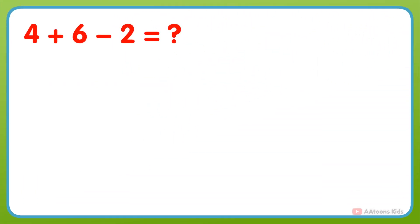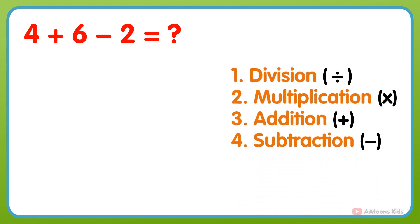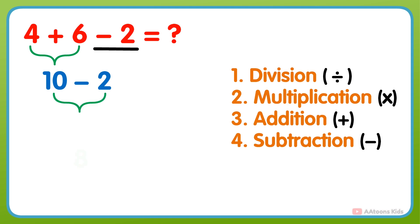What is 4 plus 6 minus 2? In this problem, two operations — addition and subtraction — are given. So according to the order, we would first perform the addition: 4 plus 6 gets 10. And next, subtract 2 from the result, and you will get your answer: 10 minus 2 equals 8.